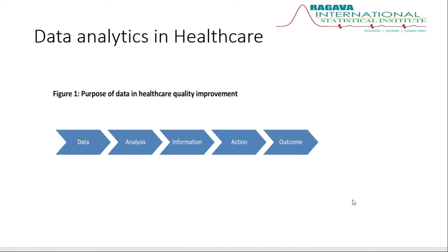Now we will see the exact roadmap for data analysis, especially in healthcare quality improvement. These are the things we need to do as a data analyst. The first step is to collect data. After data collection, analyze your data. From the analysis, we can get some information — it may be positive or negative.